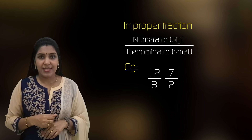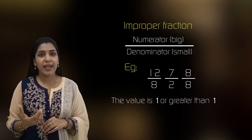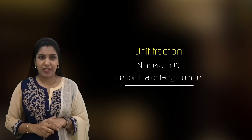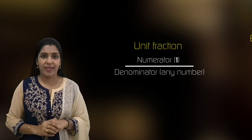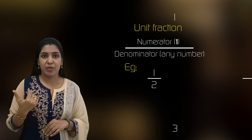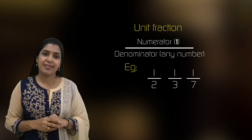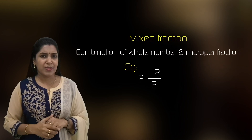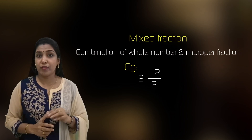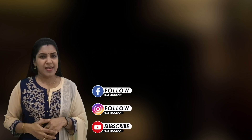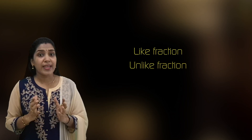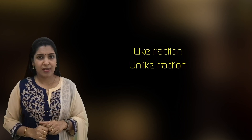For example, 12/8 and 7/2 — these are all improper fractions. In a unit fraction, the numerator is always 1, such as 1/2, 1/3, 1/7. In a mixed fraction, you can see the combination of a whole number and an improper fraction. These are the different types of fractions.